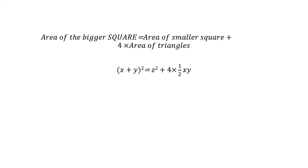On the right side, four divided by two gives us two, so we get 2xy. We can also expand the left bracket: x² + 2xy + y² = Z² + 2xy.